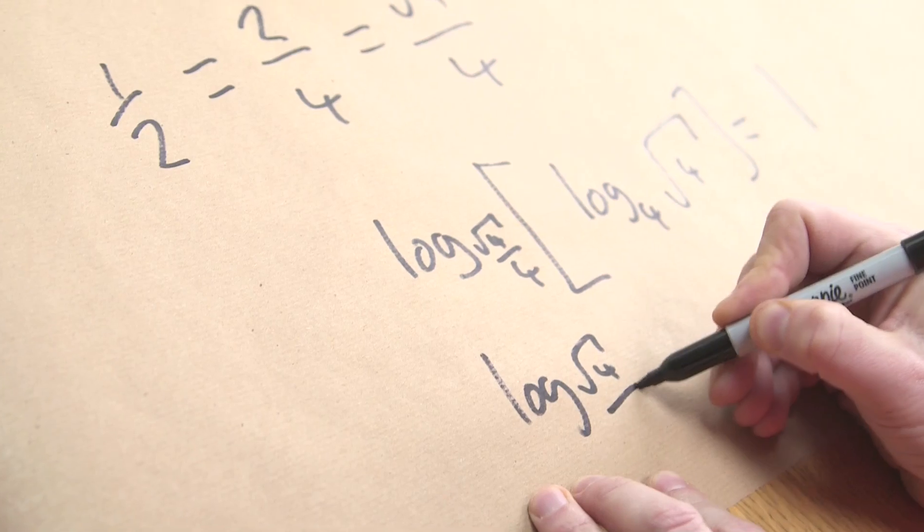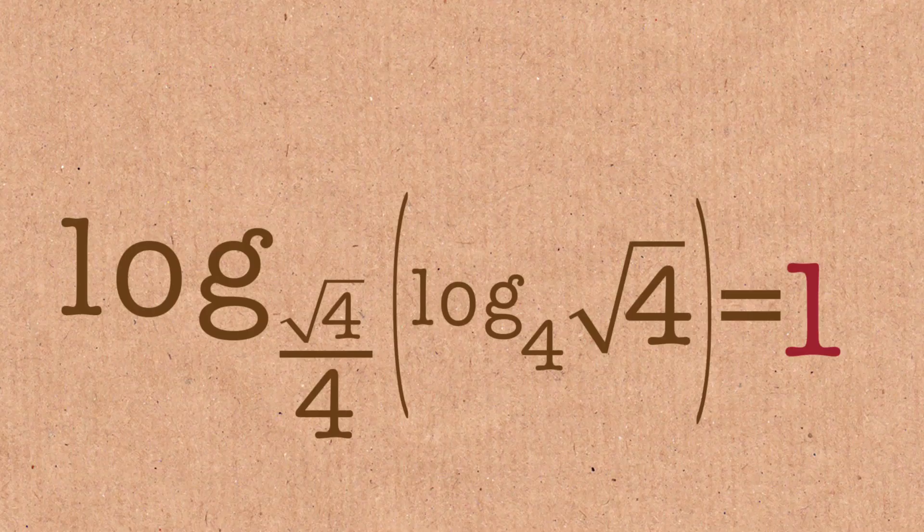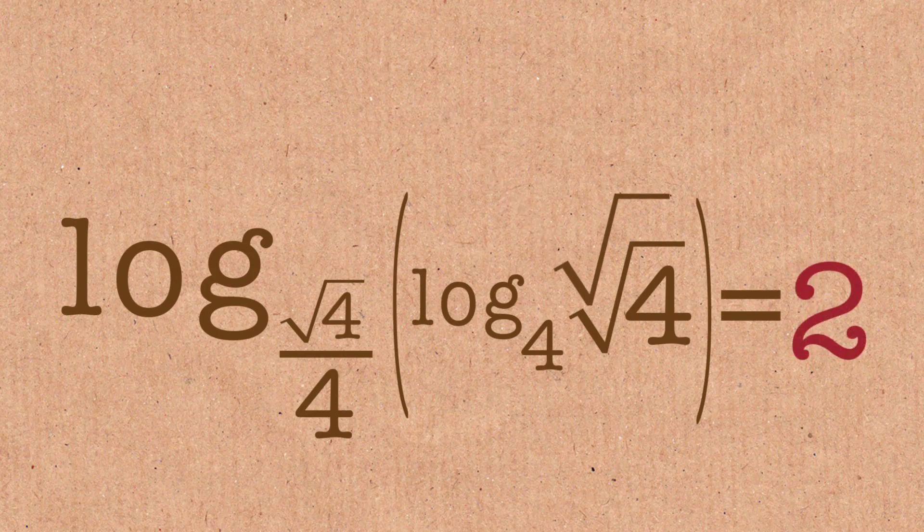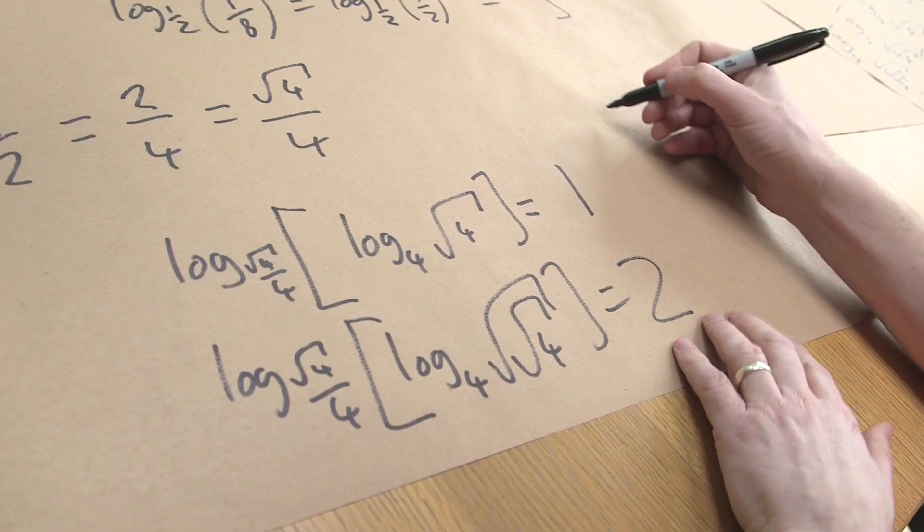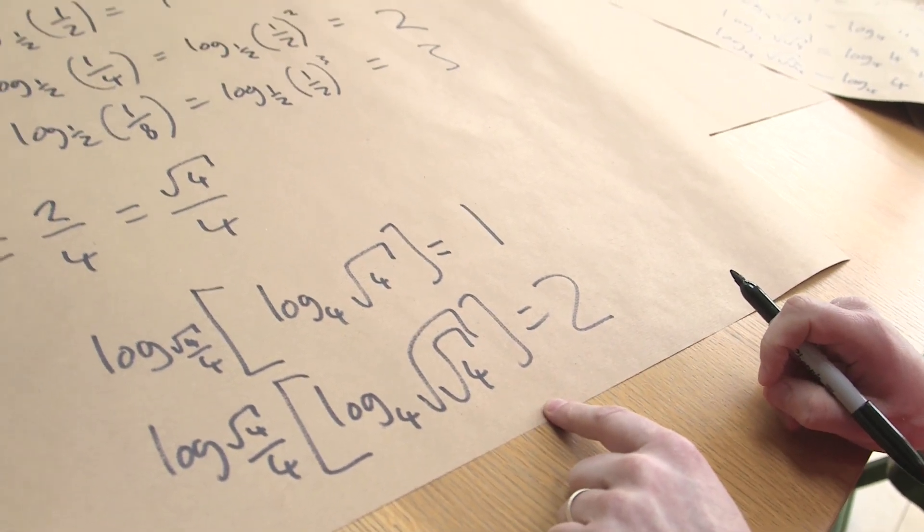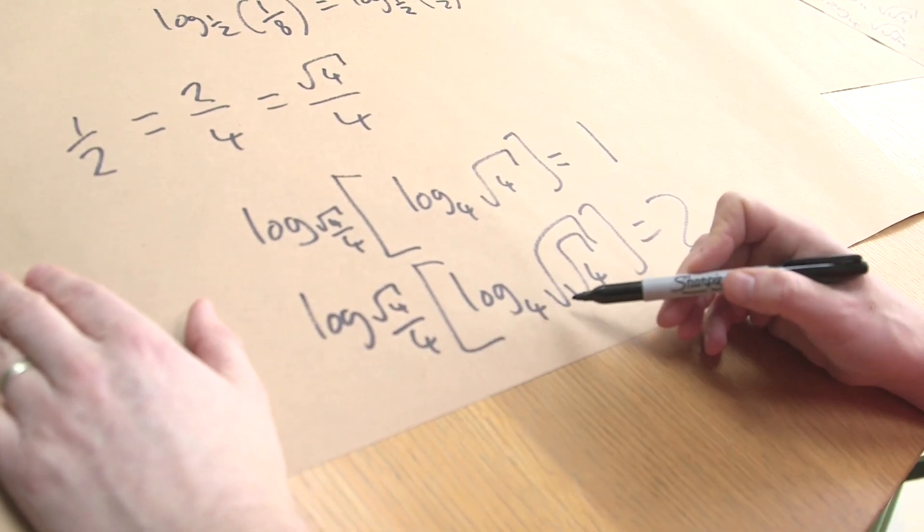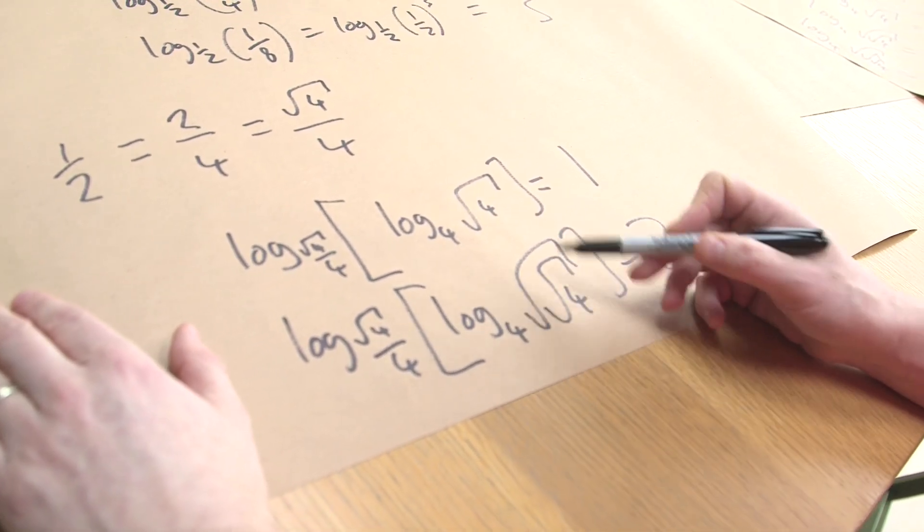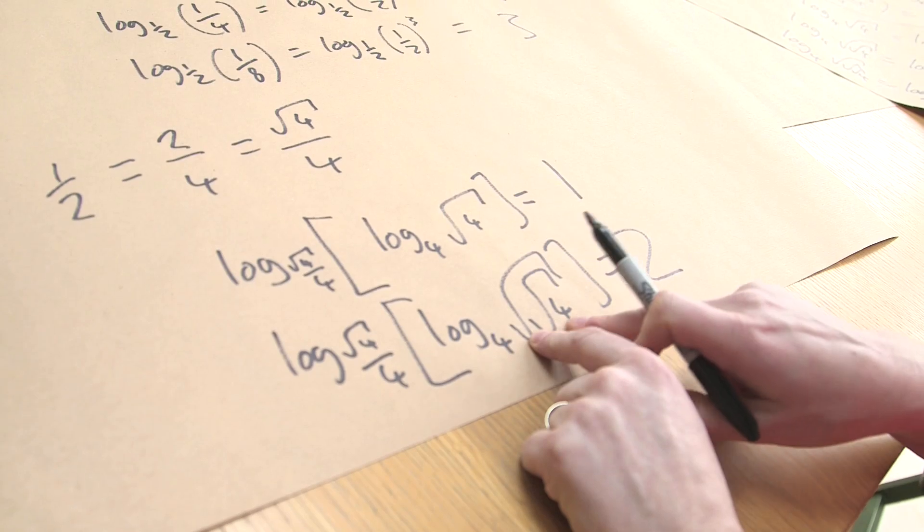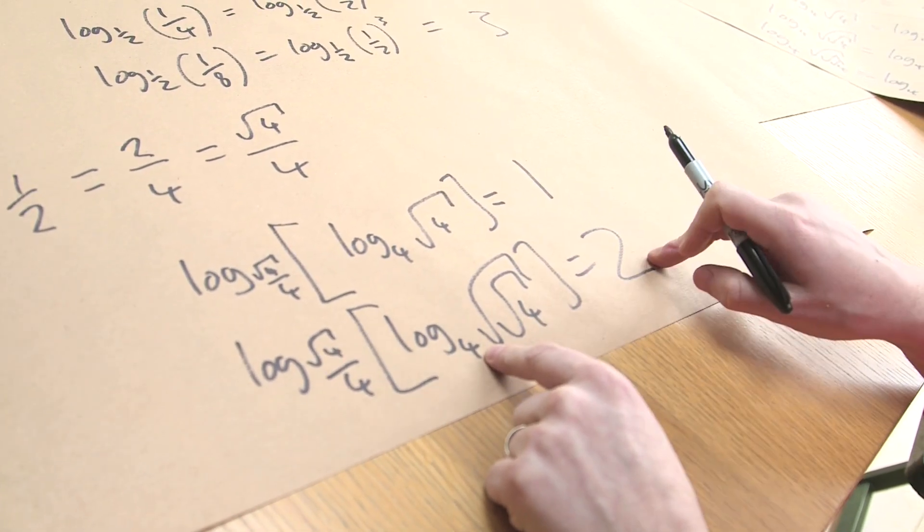But log to the base root 4 over 4 of log base 4 of the square root of the square root of 4 equals 2. So this will expand out, and however many square root signs you put there is equal to the number. So if you put a billion square root signs there, you get a billion. Yeah, if you have a bit of paper big enough to write log root 4 over 4 of log 4, the square root of the square root so much that you have a billion square root signs of the square root of 4, well, including everything there are a billion square root signs, that would equal a billion.